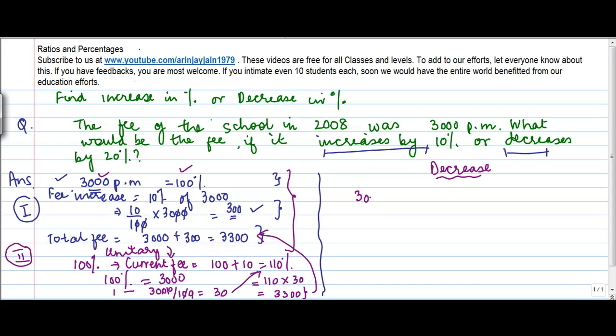So 3000 is equal to 100%. The decrease is 20%, okay? So the decrease is equal to 20 upon 100 into 3000. It's 20% of this fee. I cancel out these two zeros, I get two threes. 30 into 20 will give me 600.